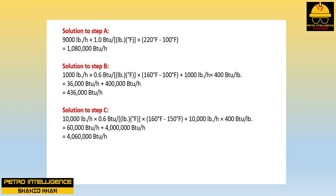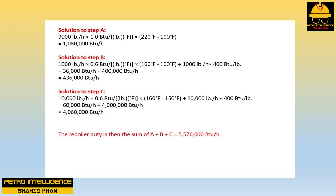Solution to Step B: 1,000 lb/hr × 0.6 BTU/lb·°F × (160 − 100)°F + 1,000 lb/hr × 400 BTU/lb = 36,000 BTU/hr + 400,000 BTU/hr = 436,000 BTU/hr. The reboiler duty is then the sum of A + B + C = 5,576,000 BTU/hr.